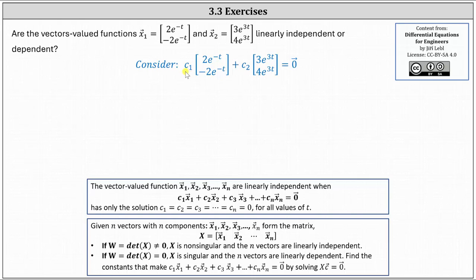From here we write the corresponding system of equations which gives us 2c1e^(-t) plus 3c2e^(3t) equals zero, and negative 2c1e^(-t) plus 4c2e^(3t) equals zero.